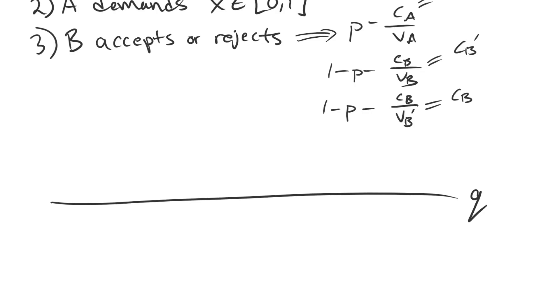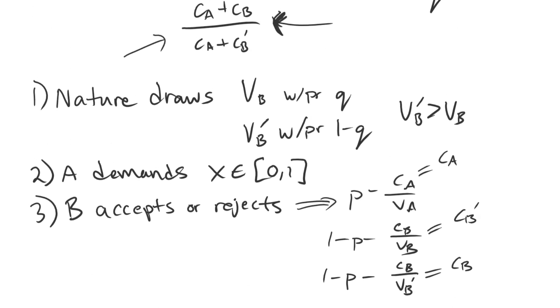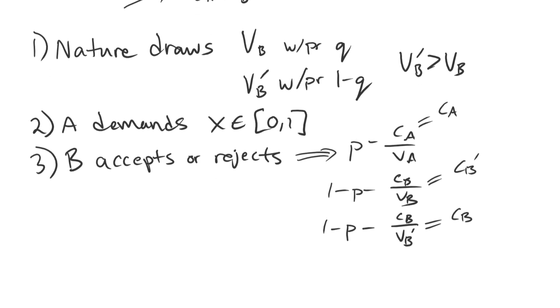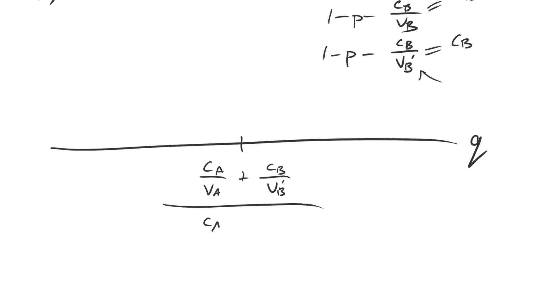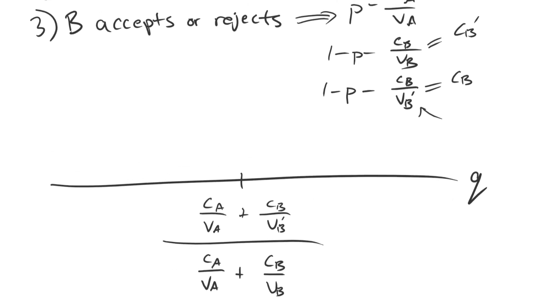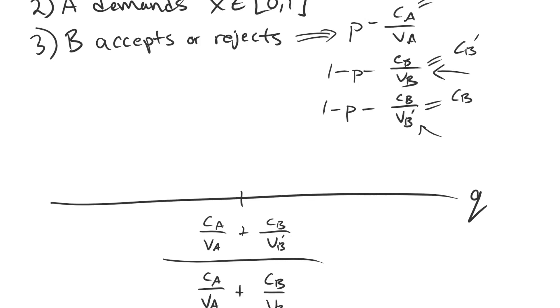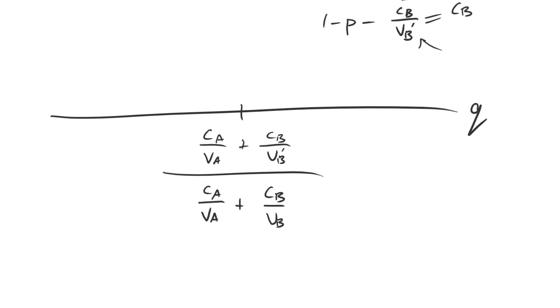As a function of Q, the cut point is now CA over VA plus CB over VB prime, the higher valuation type paying the lower cost for war, divided by CA over VA plus CB over VB. We have solved for the game now. If Q is above this critical cut point, then we have the risky demand being made. If Q is below that cut point, we have the safe demand being made. This is what's happening in the equilibrium of the game. We're done there.